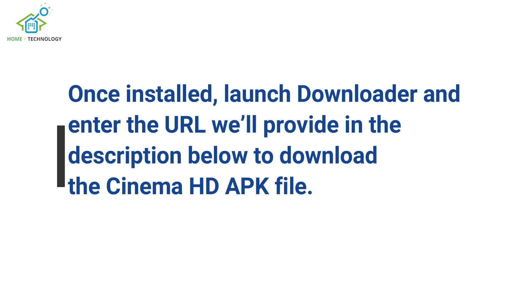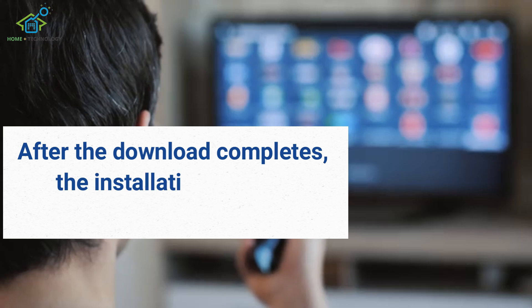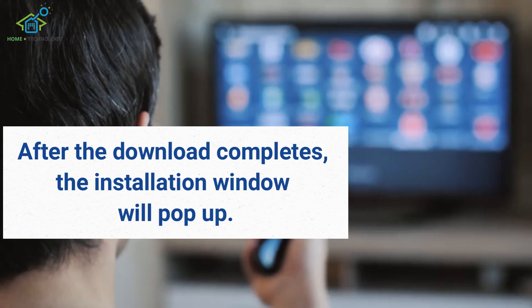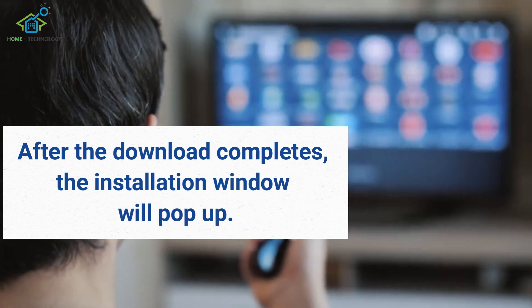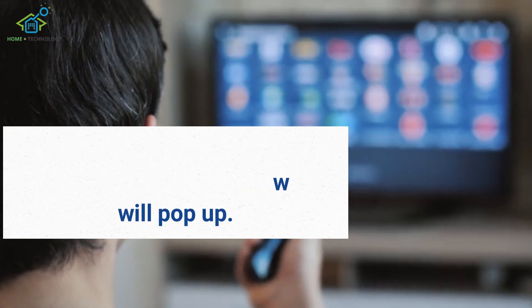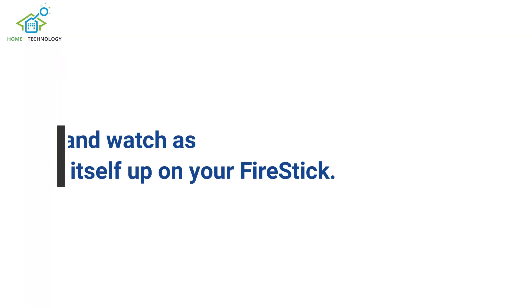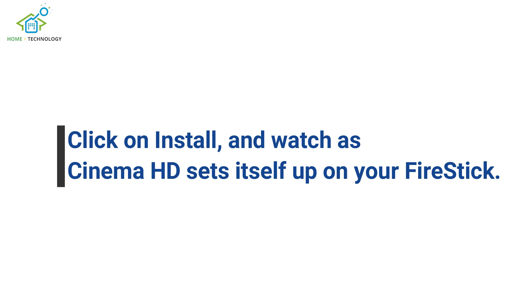Once installed, launch Downloader and enter the URL we'll provide in the description below to download the Cinema HD APK file. After the download completes, the installation window will pop up. Click on Install and watch as Cinema HD sets itself up on your Fire Stick.